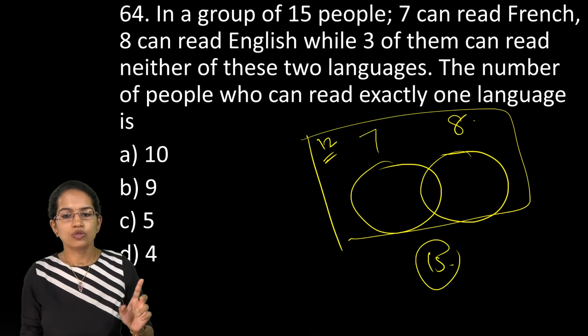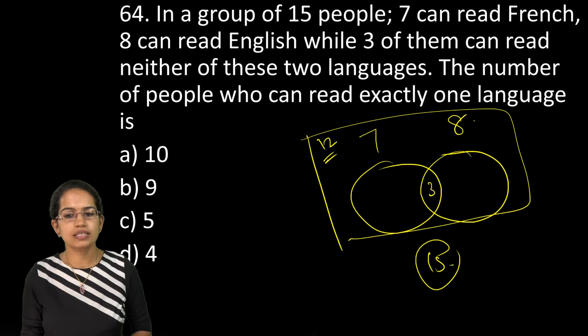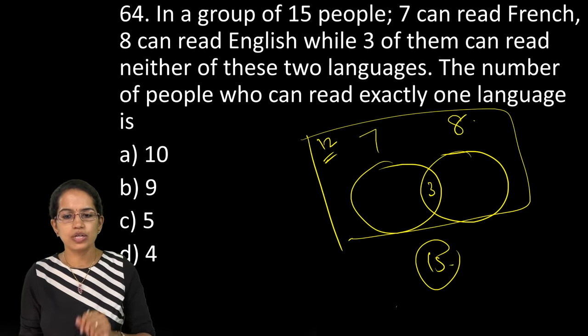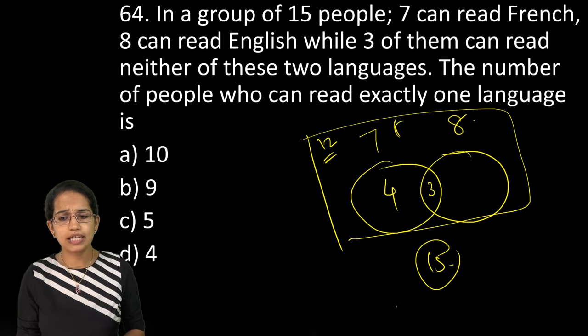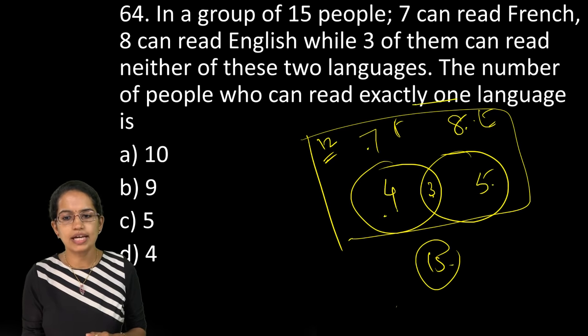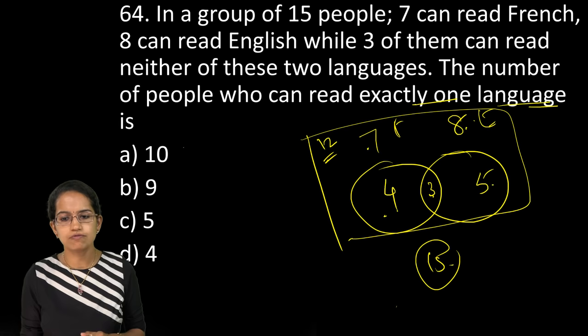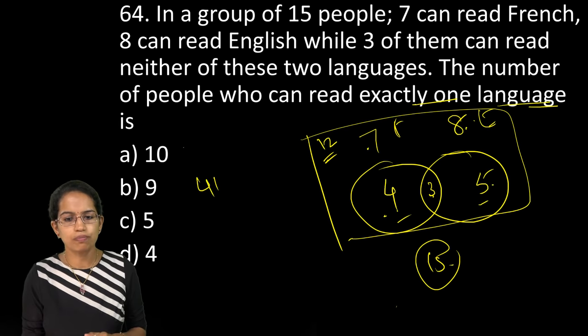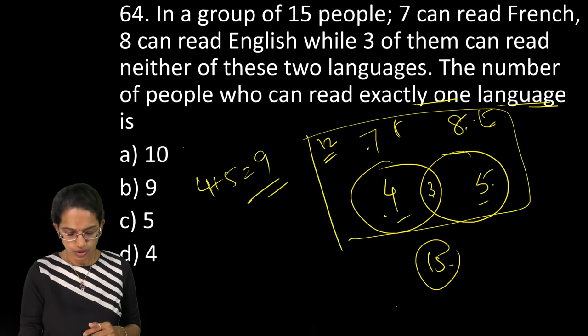15. So what is common between this is 3. Now individually, how much can read French would be 4. How much can read English would be 5. 5 plus 3 is 8 and 3 plus 4 is 7 here. So who can read exactly one language is 4 plus 5. So 4 plus 5 that is 9 would be your right answer.